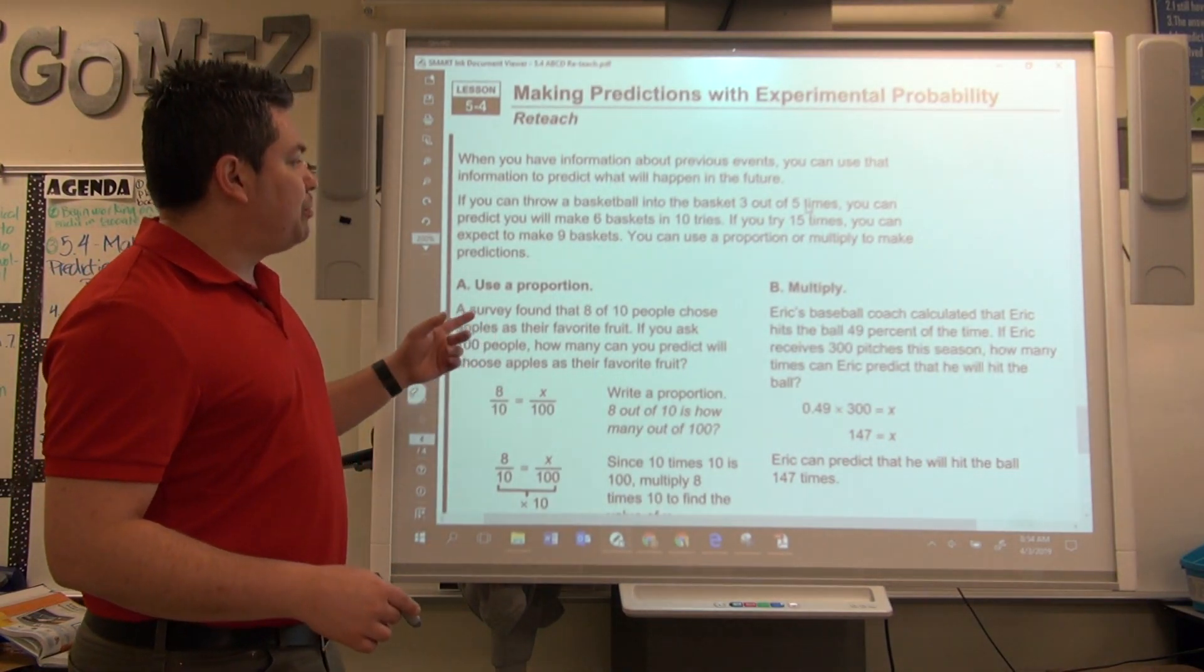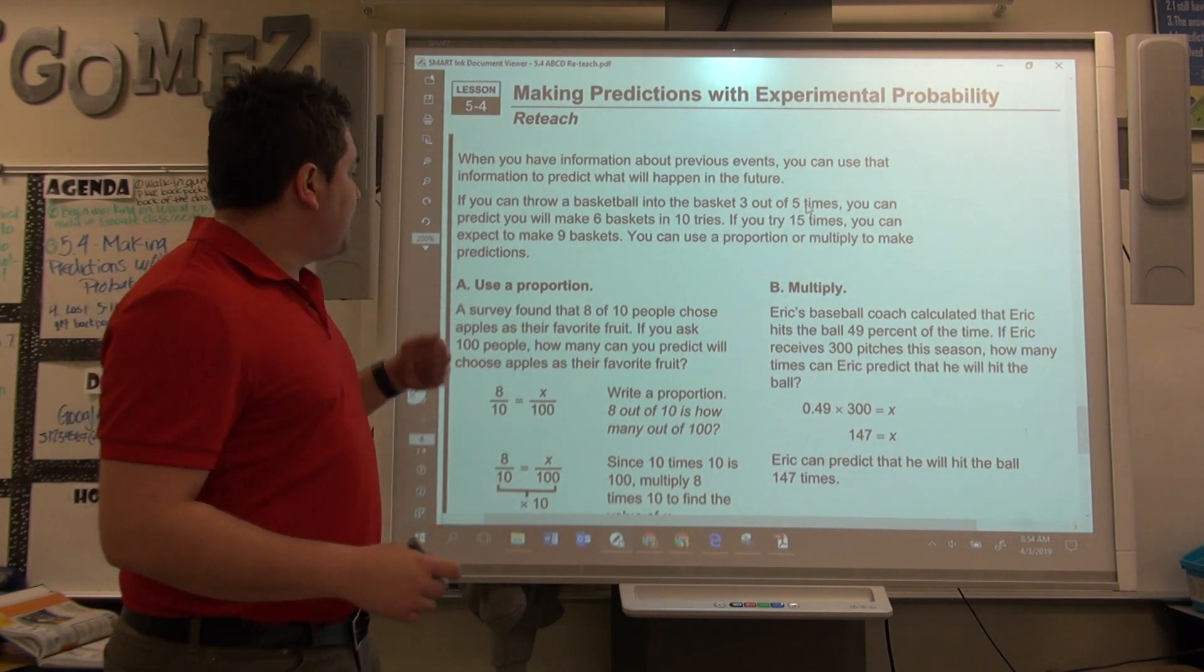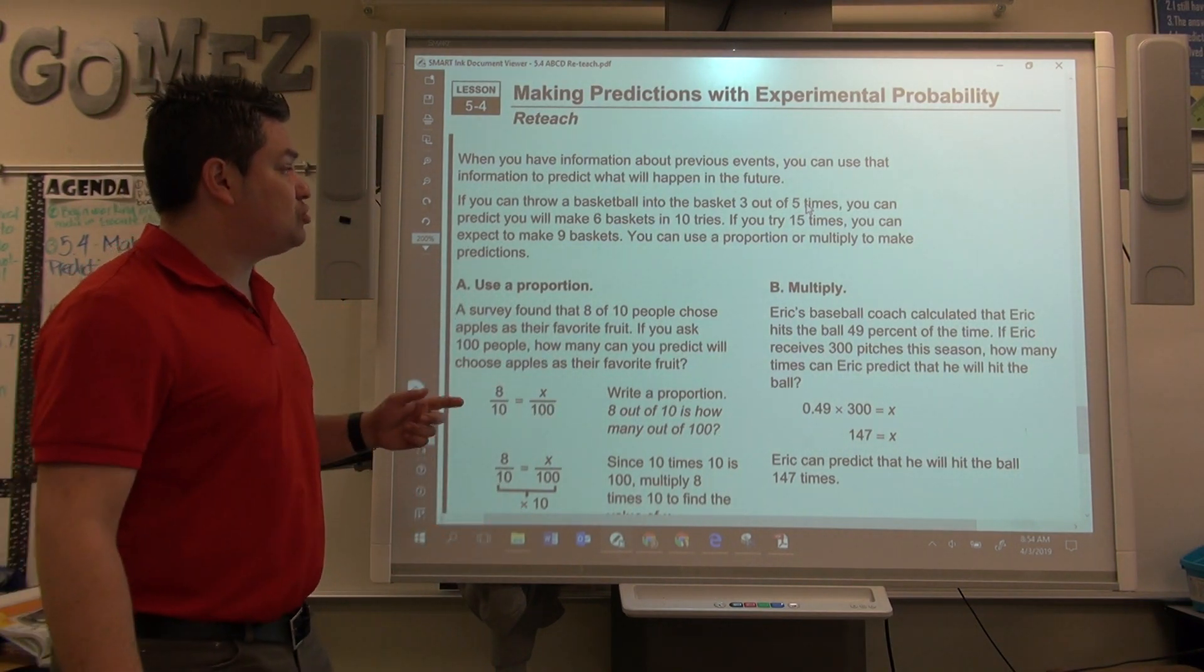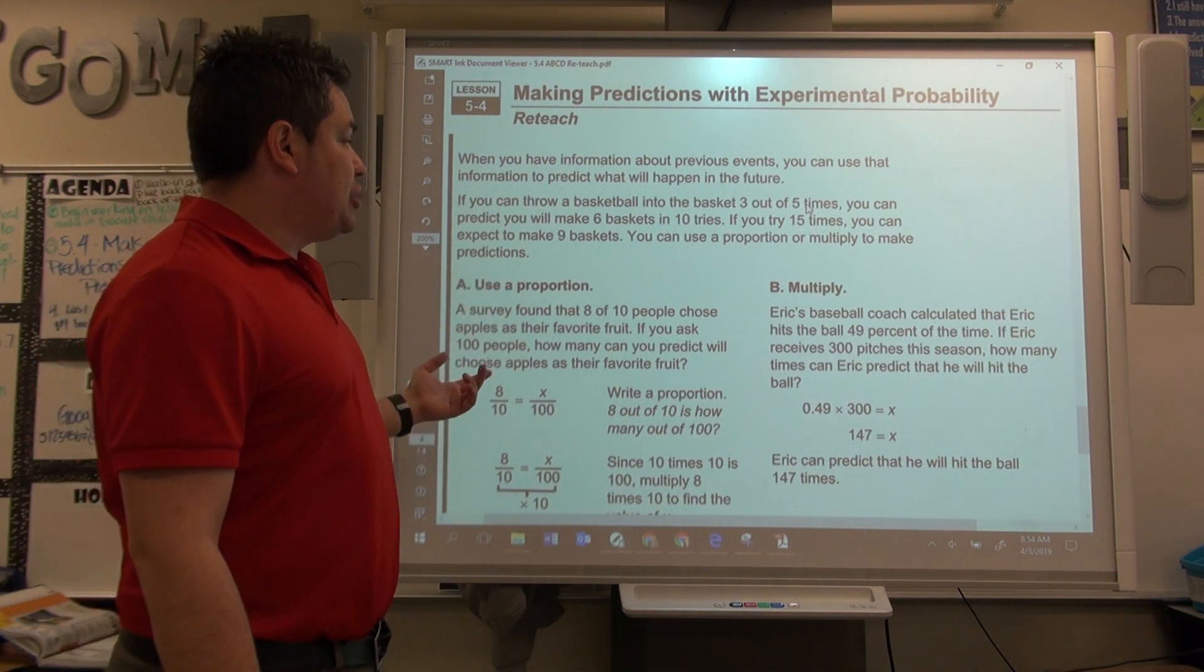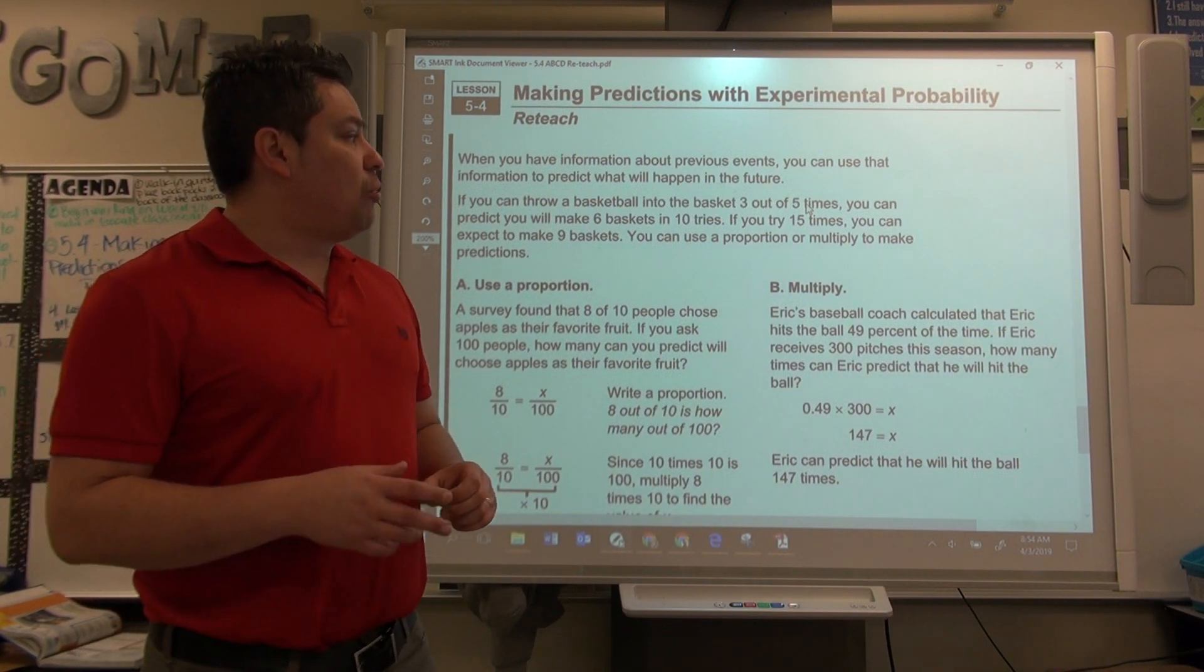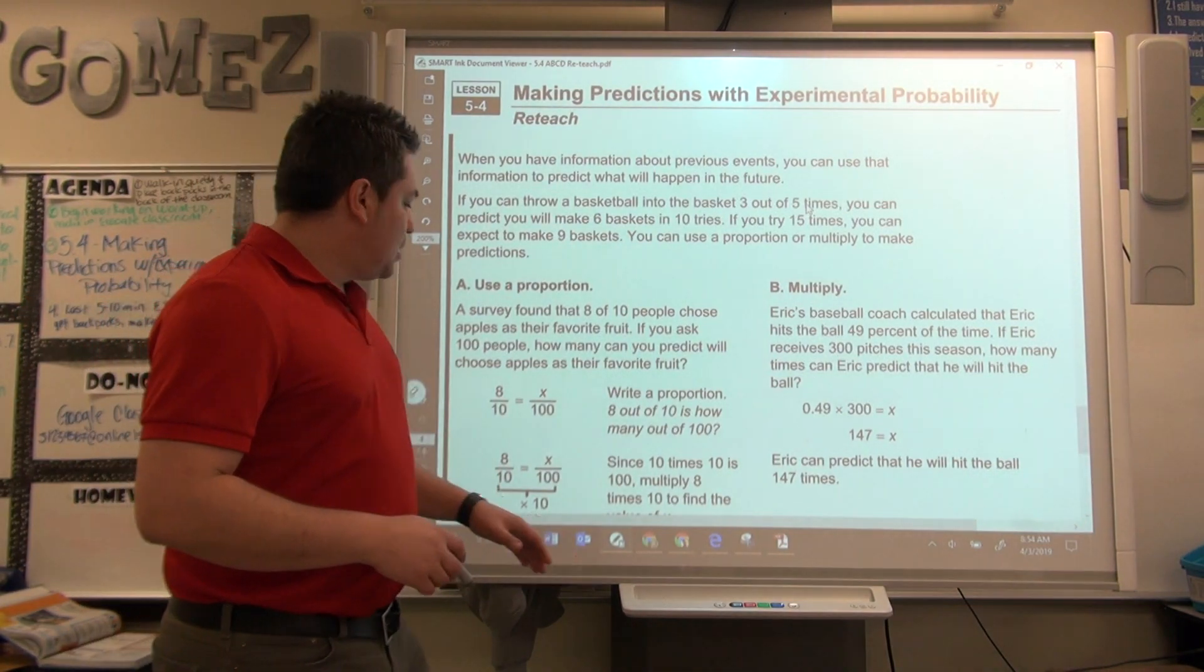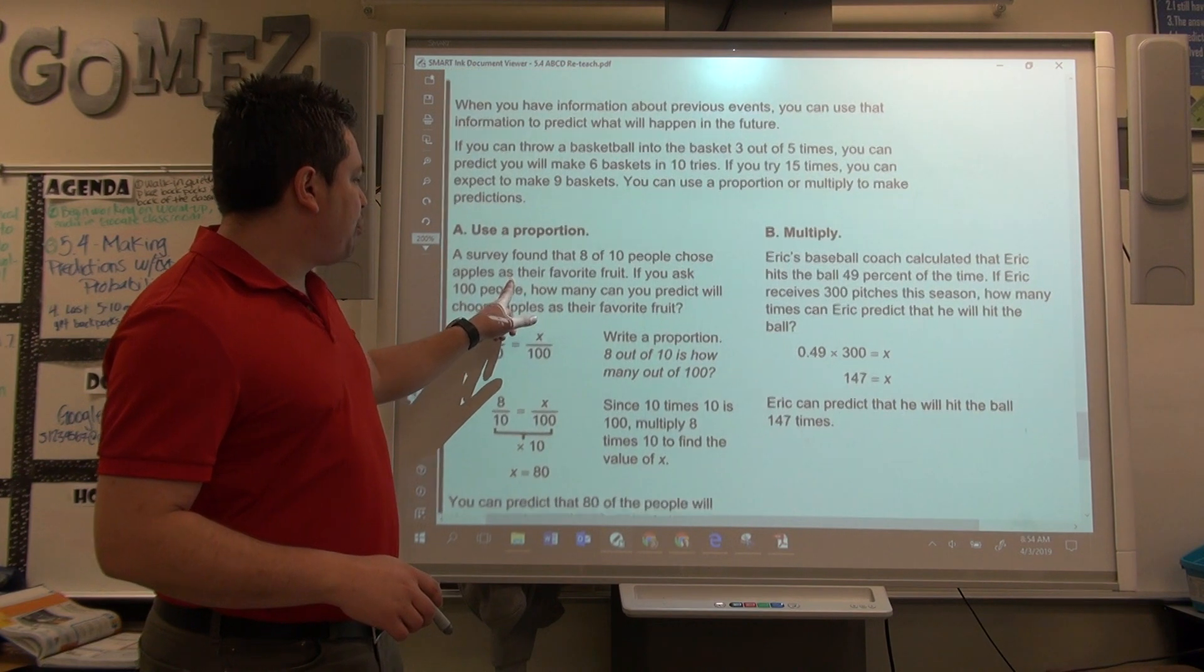If you can throw a basketball into a basket three out of five times, you can predict that you will make six baskets in ten times, in ten tries. If you try 15 times, you can expect to make nine baskets and you can use a proportion to multiply or multiply to make the prediction. But how? Well, here we have sample A. It says, use a proportion.